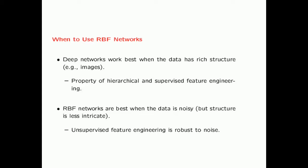So in what case do we use RBF networks and in what case do we use modern deep neural networks? Deep networks work best when the data has very rich, intricate structure — for example, images which don't have a lot of noise but have very intricate structure, best learned with hierarchical and supervised feature engineering. On the other hand, RBF networks work best when the data is noisy but the structure is less intricate, as the unsupervised features of RBF networks are robust to noise.